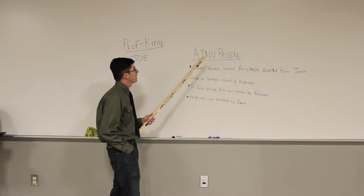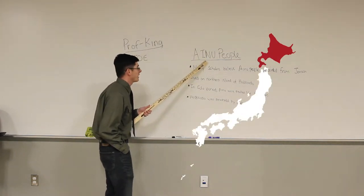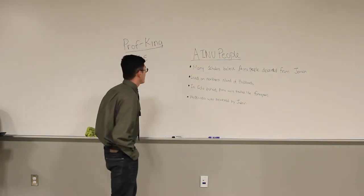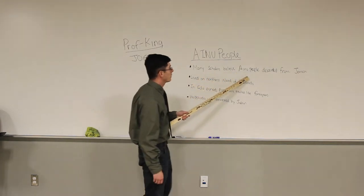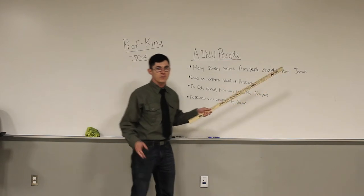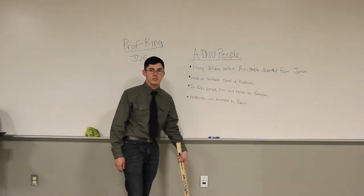We are going to be talking about the Ainu people of Hokkaido Island in Japan, and their art, and stuff. Okay, so, many scholars believe that the Ainu people descended from the earliest settlers in Japan, during the Jomon period, if you remember, because we did a lecture on that, I guess.